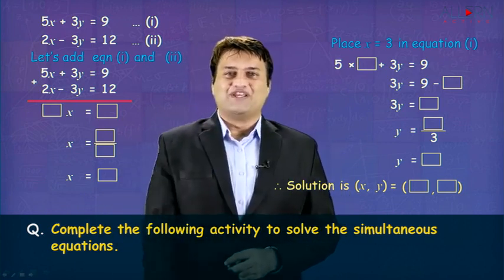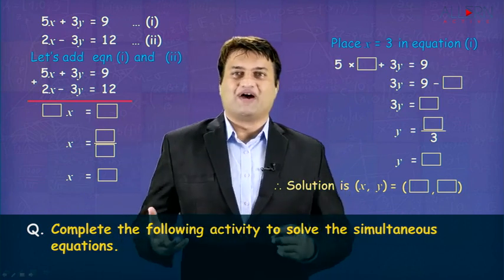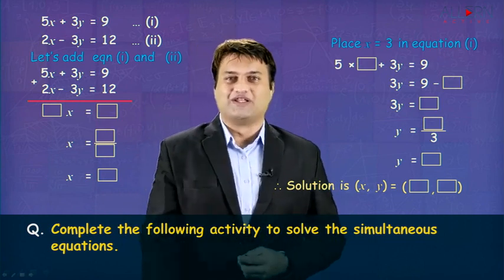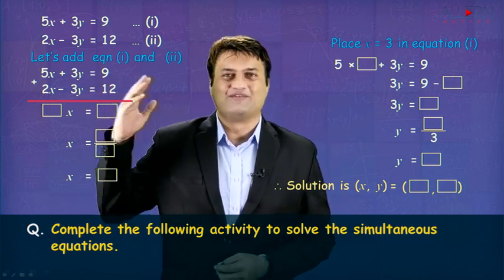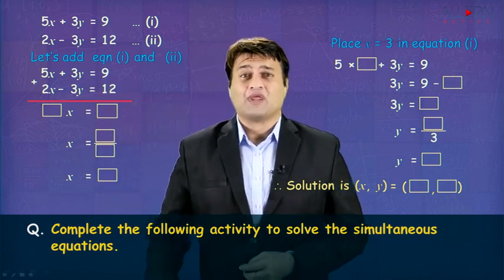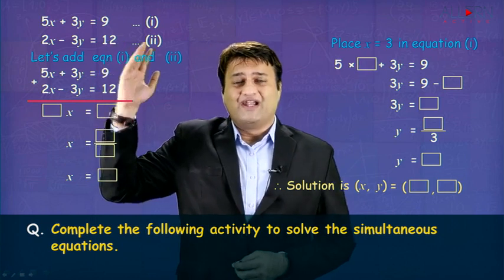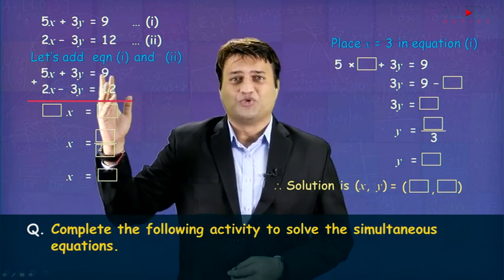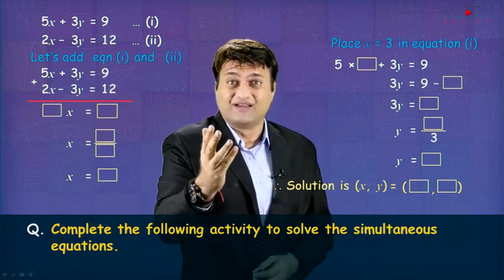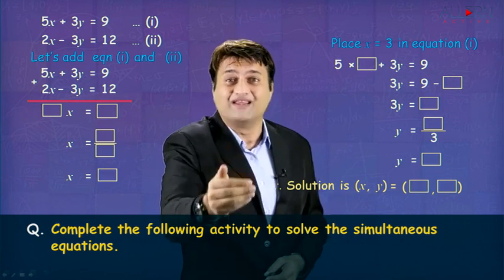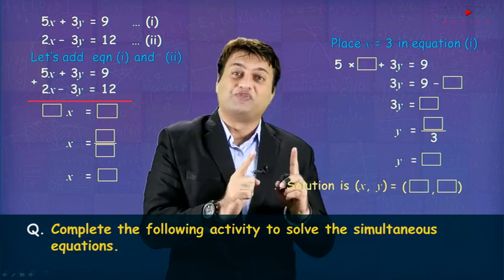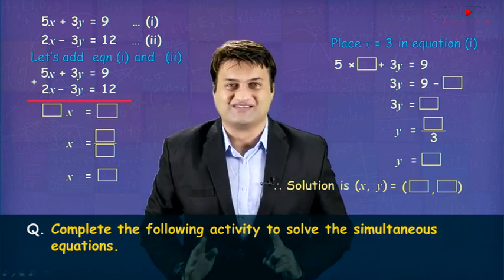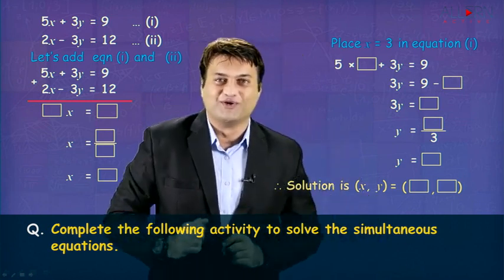The very first equation given is 5x plus 3y is equal to 9. That's equation number 1. The second equation is 2x minus 3y is equal to 12. That's equation number 2. So first we need to decide which variable we are supposed to eliminate, and as the method is elimination by equating the coefficients, we need to eliminate the variable whose coefficients are equal in both the equations.